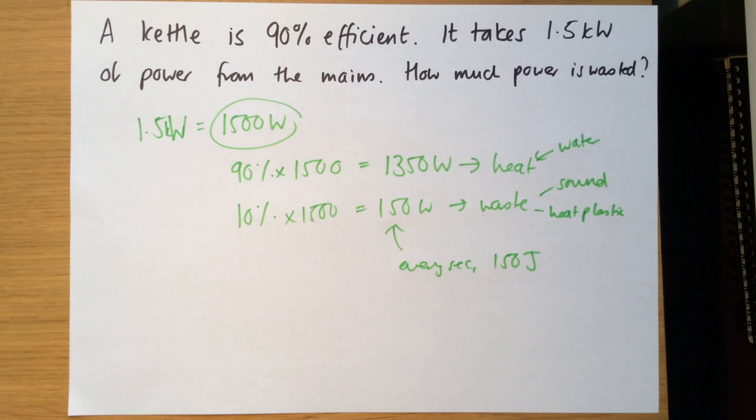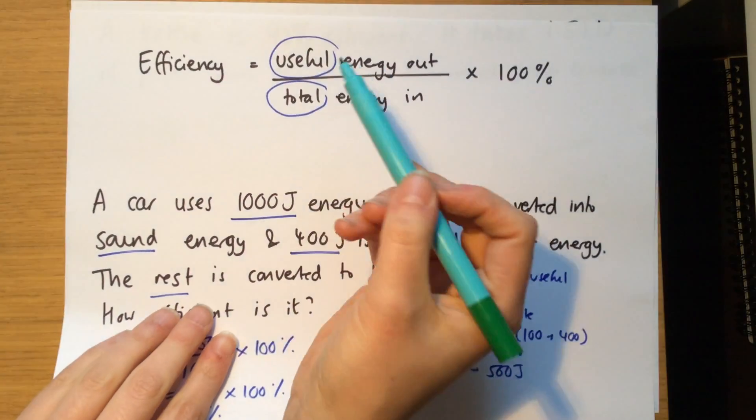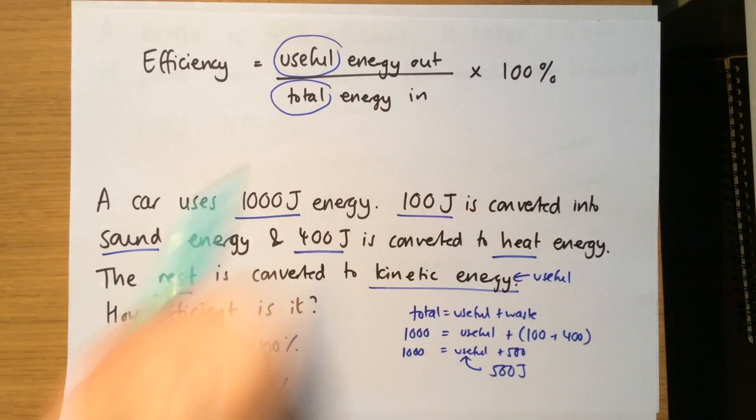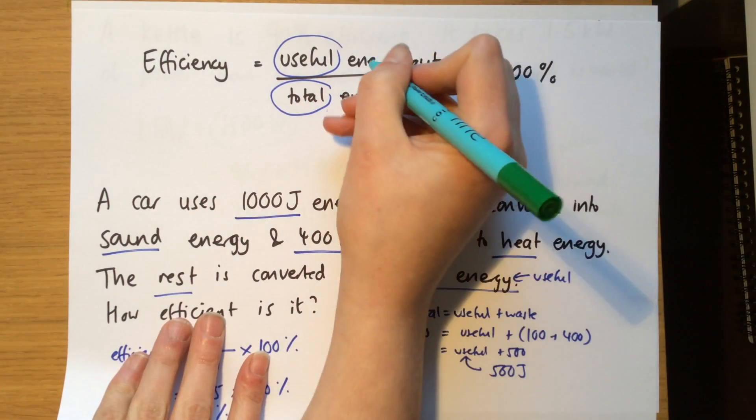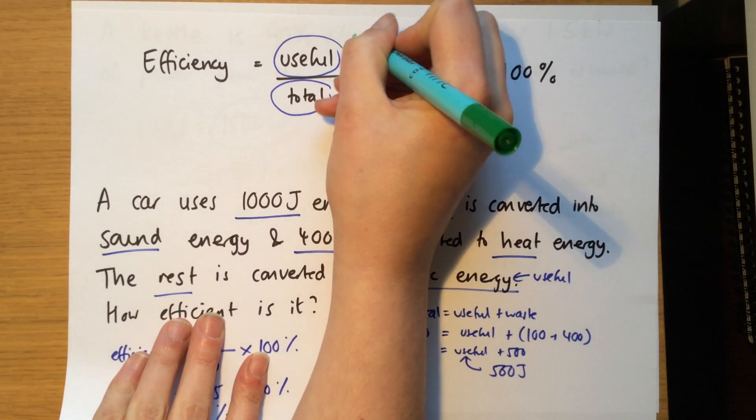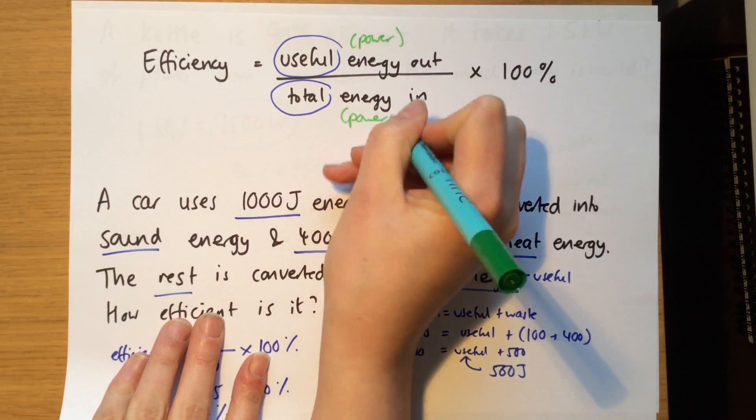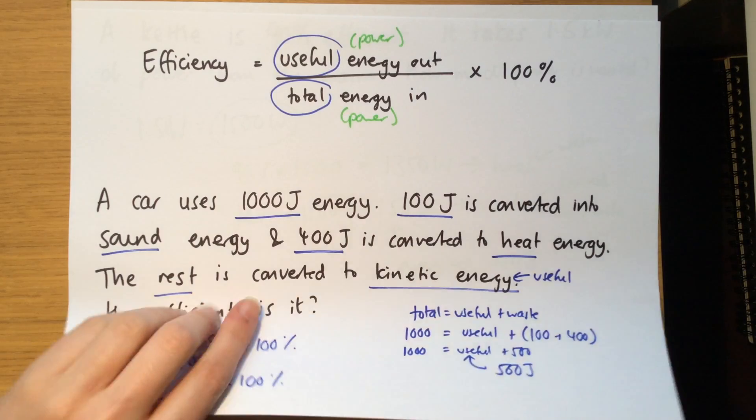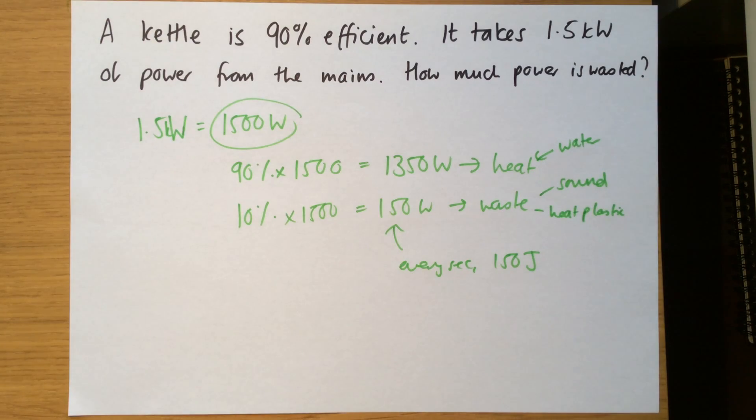So that's a simple question on efficiency. The big thing to remember is it's useful energy out, divided by the total energy in. Now, you can, if you want to, as we've just done, instead of writing energy, we can use power instead. So if you get given power values, you can use those as well. And one way that we look at efficiency is, more graphically, is through Sankey diagrams, which we'll look at in the next video. So have a watch of that if you need it.